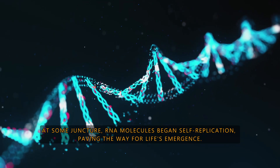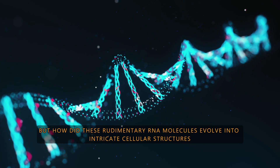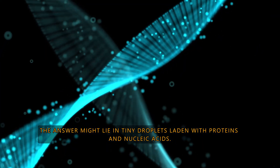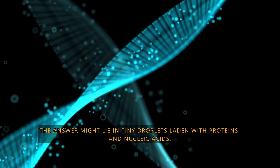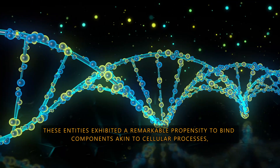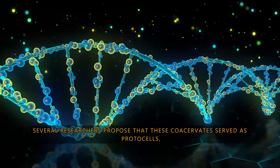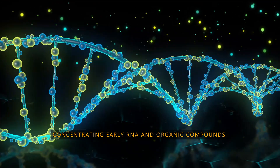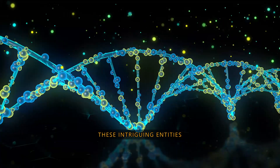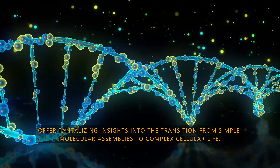At some juncture, RNA molecules began self-replication, paving the way for life's emergence. But how did these rudimentary RNA molecules evolve into intricate cellular structures ensconced within protective membranes? The answer might lie in tiny droplets laden with proteins and nucleic acids. These entities exhibited a remarkable propensity to bind components akin to cellular processes, albeit without membrane enclosures. Several researchers proposed that these coacervates served as protocells, concentrating early RNA and organic compounds, thereby fostering conditions conducive to further evolutionary steps.